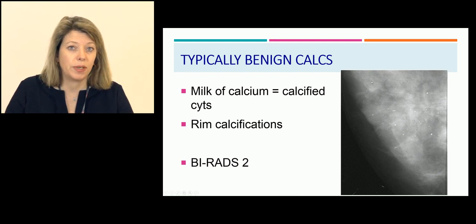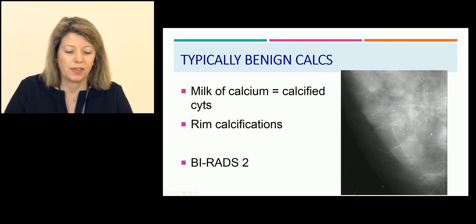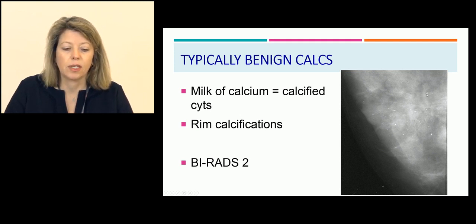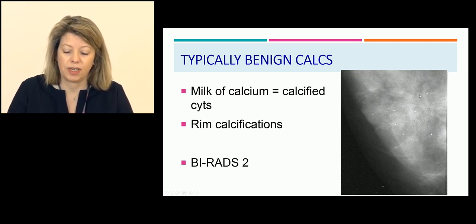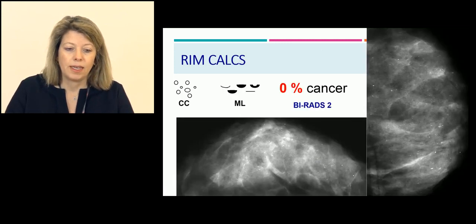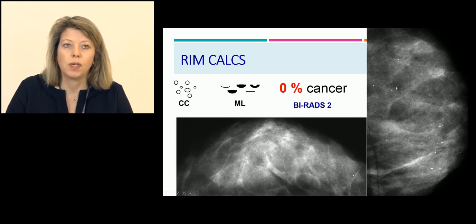Other examples of typically benign calcifications: cystic calcifications with linear orientations, usually encountered in calcified cysts. They could also be round with a clear center — rim calcifications on the CC view. This is typically benign and classified as BI-RADS 2. These are rim calcifications with linear orientations on the CC view and mediolateral view — typically benign, BI-RADS 2.